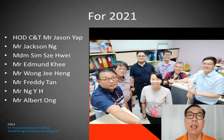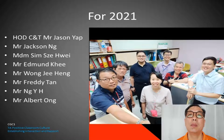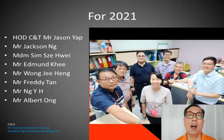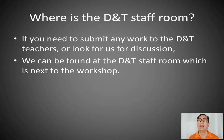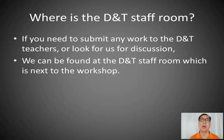We have Mr. Edmund Kee and Mr. Wong Ji Heng, our contract teacher, and we have the two workshop instructors Mr. Freddie Tan and Mr. Ng — the other Mr. Ng — and we have another person not in the picture, which is Mr. Albert Ong, the teacher that will be replacing Madam Sim. If you need to find the Design and Technology teachers, we are next to the staff room which is located next to the workshop. Please look for us there, knock on the door and we will answer you when we are available.